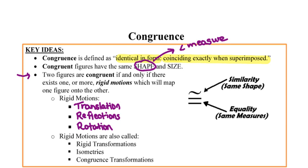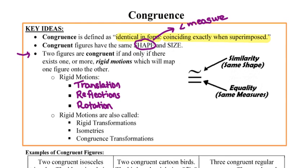Now, just a little refresher from the previous unit. Rigid motions can also be called rigid transformations, isometries, and congruence transformations.